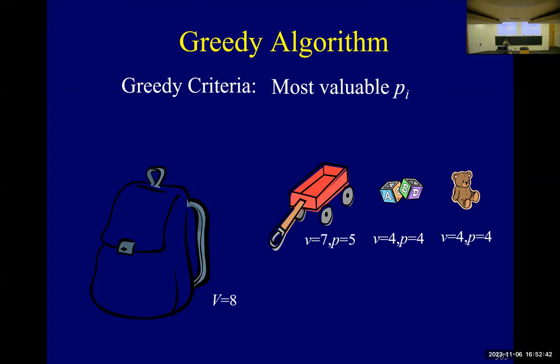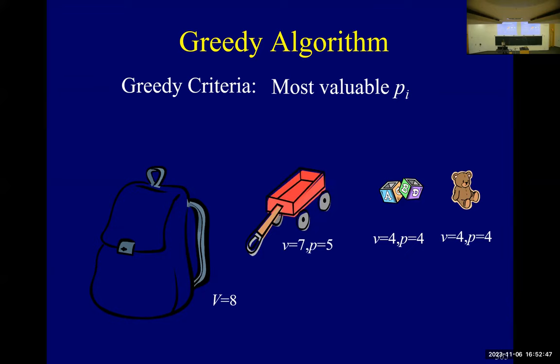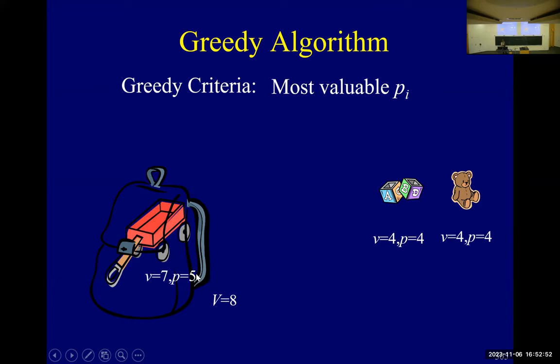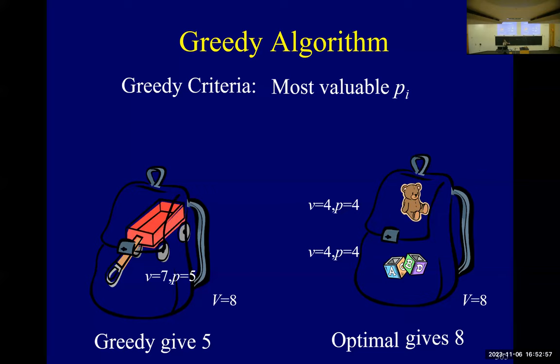In this example, the wagon has the highest price, but the optimal solution takes the two objects.